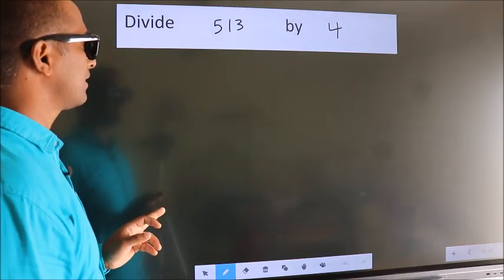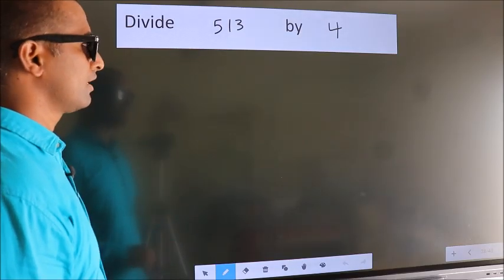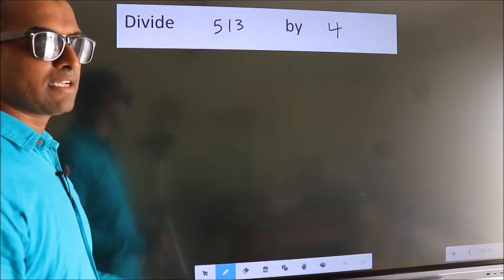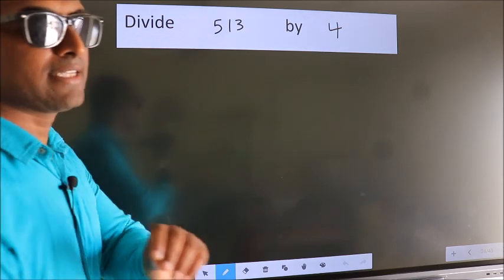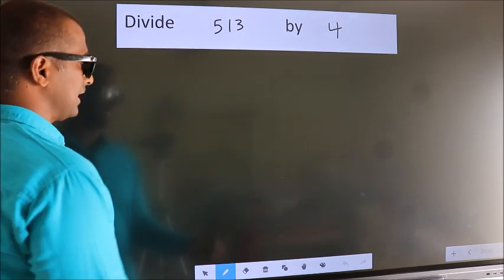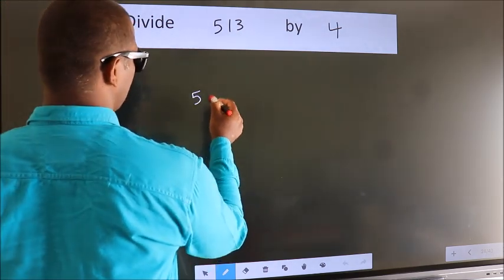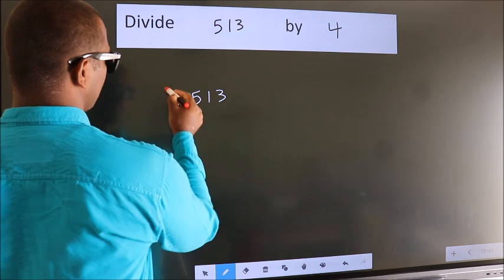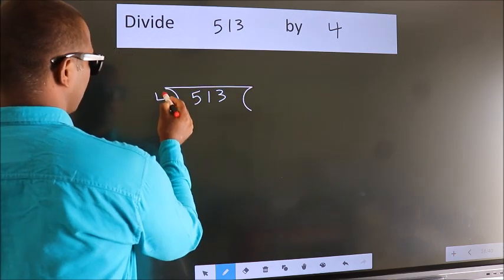Divide 513 by 4. To do this division, we should frame it in this way: 513 here, 4 here.